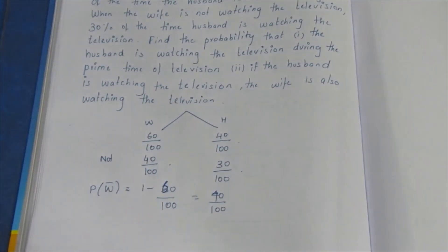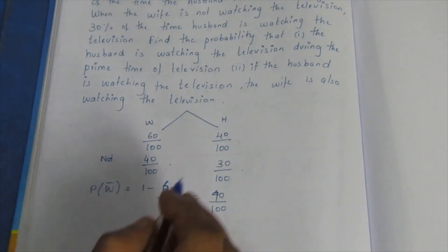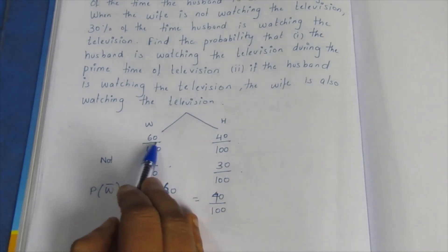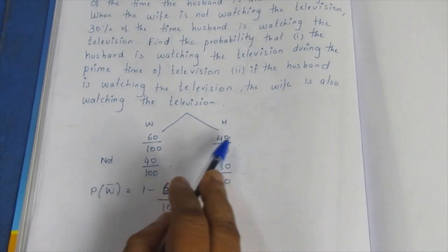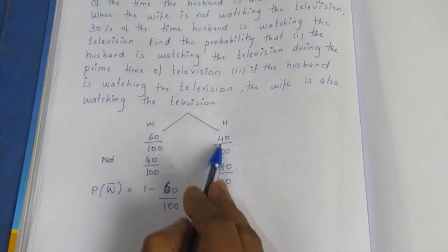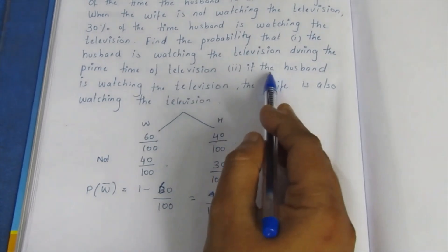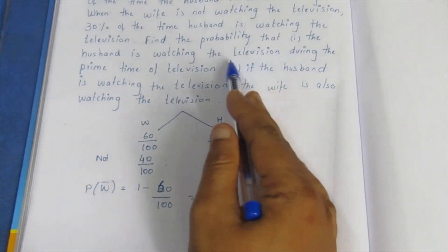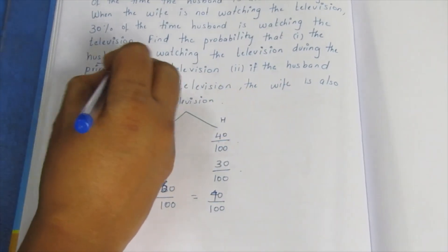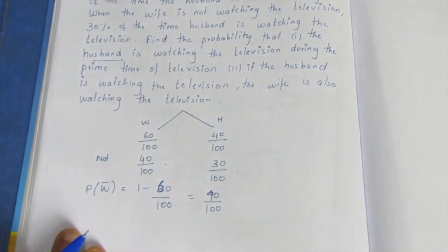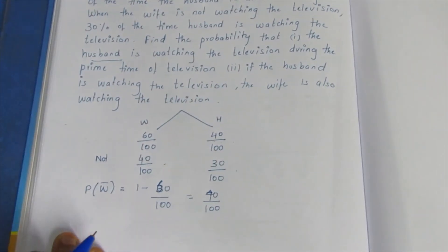The first question is: what is the probability that the husband is watching the television during prime time given that the wife is not watching?